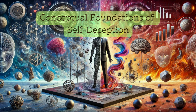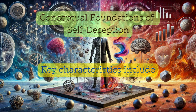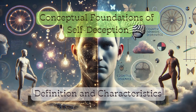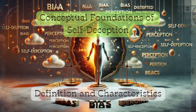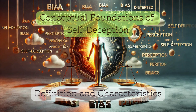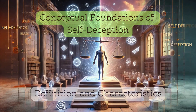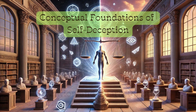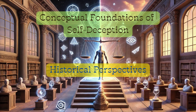Self-deception is distinct from conscious deception in that it operates at an unconscious or semi-conscious level. Key characteristics include a simultaneous belief in two conflicting ideas, the presence of a bias toward positive self-perception, and avoidance of cognitive dissonance.